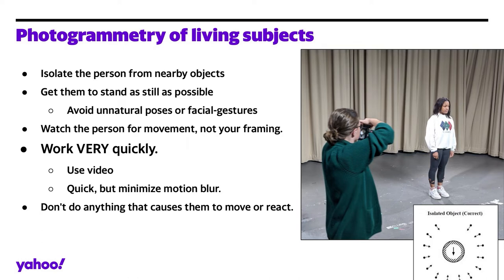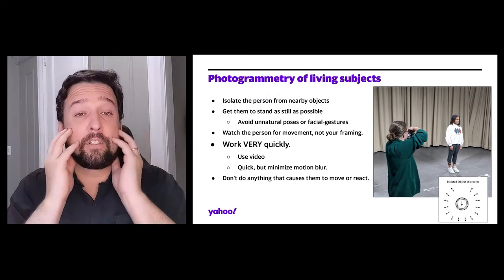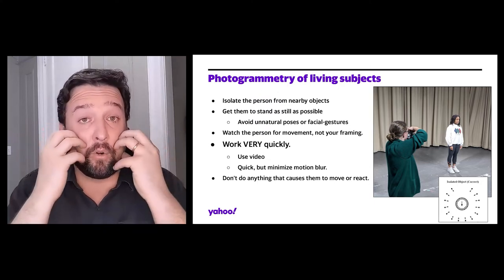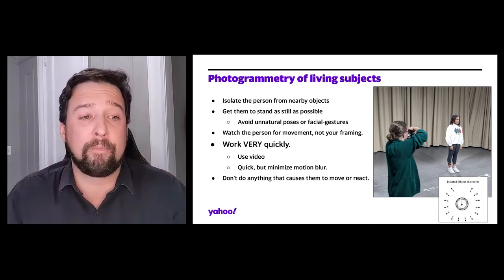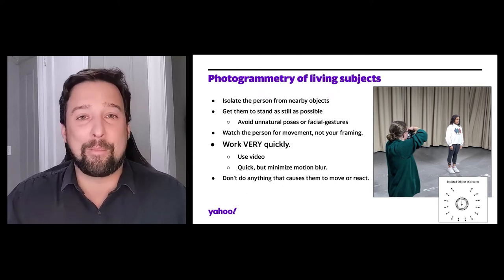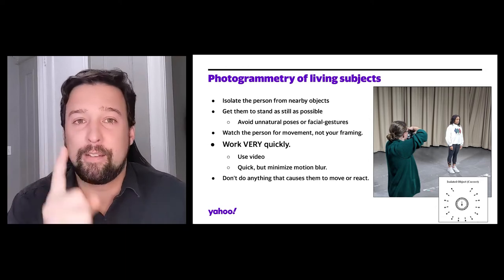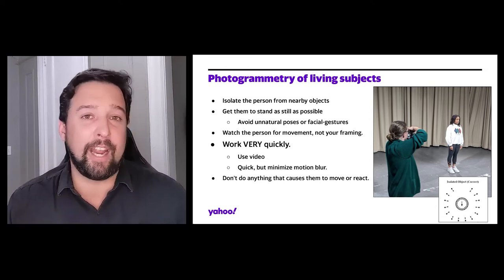Additionally, we've already mentioned photogrammetry of living subjects. Keep your subject isolated from any nearby objects — this applies to all photogrammetry, but especially living subjects where it might be hard to clip them away. Get them to stand as still as possible, avoiding any unnatural poses that they might not be able to hold for 10 to 15 seconds. Arms crossed is easy because gravity is pulling you down. Arms at your sides or in your pockets is easy because gravity is pulling you down. But if the arms are up or they have any facial gestures that they can't naturally hold for very long, the muscles will start to droop due to gravity and you'll see a lot of distortion. You want to watch that person really specifically and make sure they're not moving. It's very common for people to smile or change their chin, or start getting into what poses they want to be in from shot to shot.